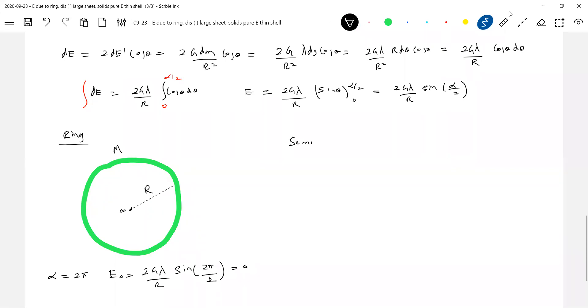Next for semicircle. Let this be the lambda at the center of the semicircle. What is alpha here? In this case alpha will be pi. Pi radians it will be obtained. So what is alpha here? 2 pi radians. Here what is alpha? Alpha will become pi. So substitute this formula. It is just 2g lambda by r.